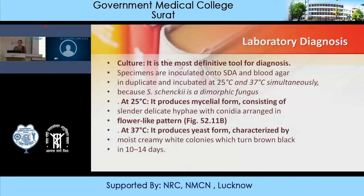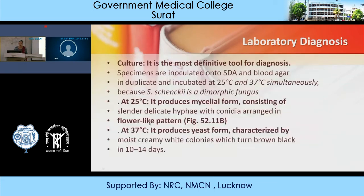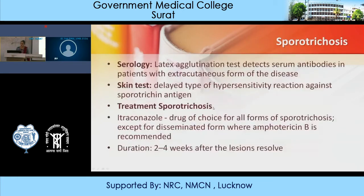Culture is the most definitive tool. Specimens are inoculated into SDA and blood agar in duplicate, incubated simultaneously at 25°C and 37°C because it is dimorphic. At 25°C, it produces mycelial form with slender, delicate hyphae with conidia arranged in a flower-like pattern. At 37°C, it produces yeast form characterized by moist, creamy white colonies turning brown to black within 10 to 14 days. Serologically, latex agglutination test detects serum antibodies in patients with extra-cutaneous disease. Skin test checks delayed-type hypersensitivity reaction against sporotrichin antigen.